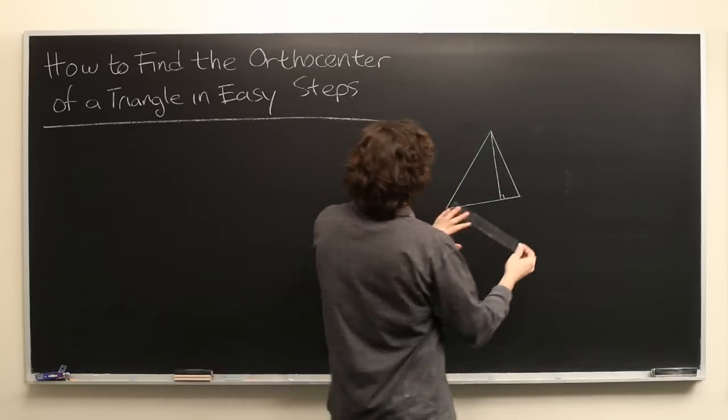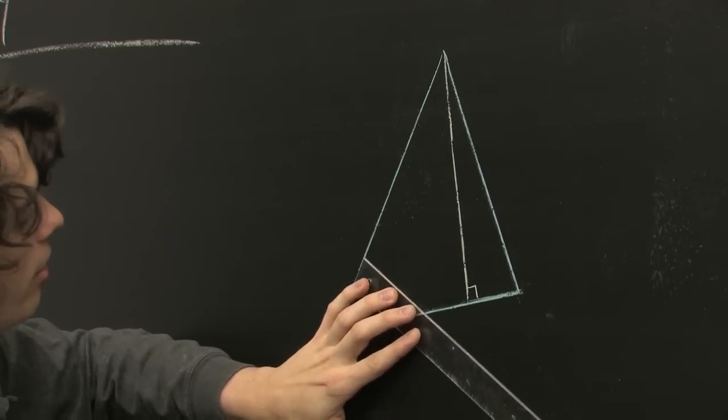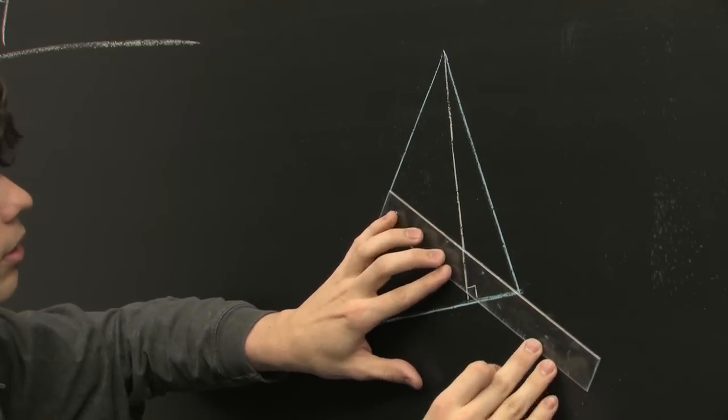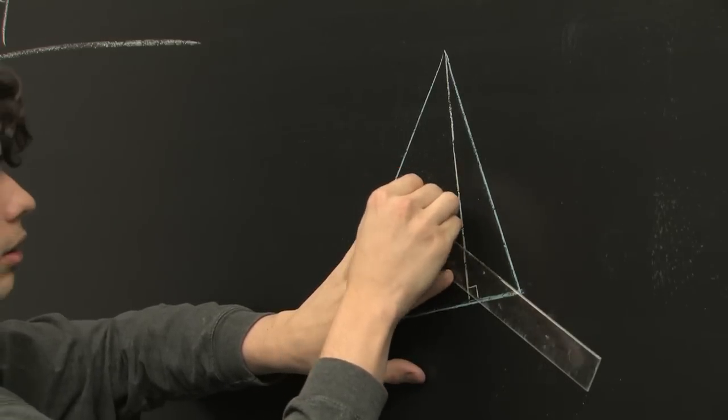We'll do the same for the others. Make a right angle, slide it up until it hits the corner like so. Draw that line.